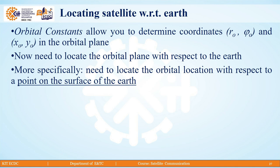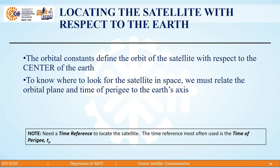First we are going to discuss locating the satellite with respect to the earth. Orbital constants allow you to determine coordinates r₀, φ₀, x₀, and y₀ in the orbital plane. Now we need to locate the orbital plane with respect to the earth, and more specifically, locate the orbital position with respect to a point on the surface of the earth. The orbital constants define the orbit of the satellite with respect to the centre of the earth. To know where to look for the satellite in space, we must relate the orbital plane and time of perigee to the earth's x-axis.